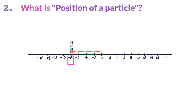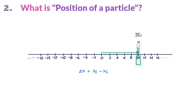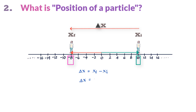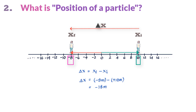A particle's displacement is the change in its position and is given as delta x equals final position minus initial position. So if Minnie was initially at plus 10 meters and finally at minus 8 meters, then displacement delta x equals x_final minus x_initial equals minus 8 meters minus plus 10 meters, which equals minus 18 meters. Since the answer is negative, the displacement is in the left or negative x-direction, which indeed is Minnie's displacement.